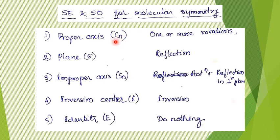The first symmetry element is the proper axis, which is denoted by C-n (capital C, subscript n). On this symmetry element, the operation that can be performed is rotation — either one rotation or multiple rotations on the same axis are possible. As we go through more examples, we will come across all the different kinds of rotations possible on a proper axis.